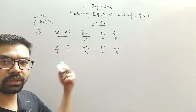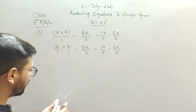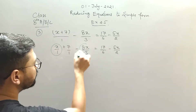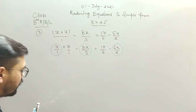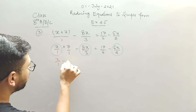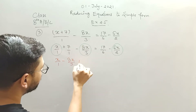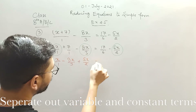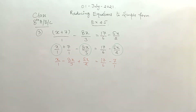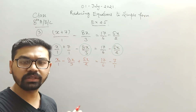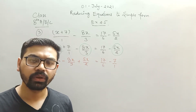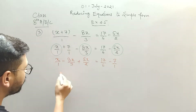Again you need to club the constant terms on one side and variables on the other side. The variable terms are: x divided by 1, minus 8x divided by 3, and plus 5x divided by 2 on the LHS. The constant terms: 17 divided by 6 on the RHS and minus 7 divided by 1. If anything is unclear, any student can ask me in the later sessions.